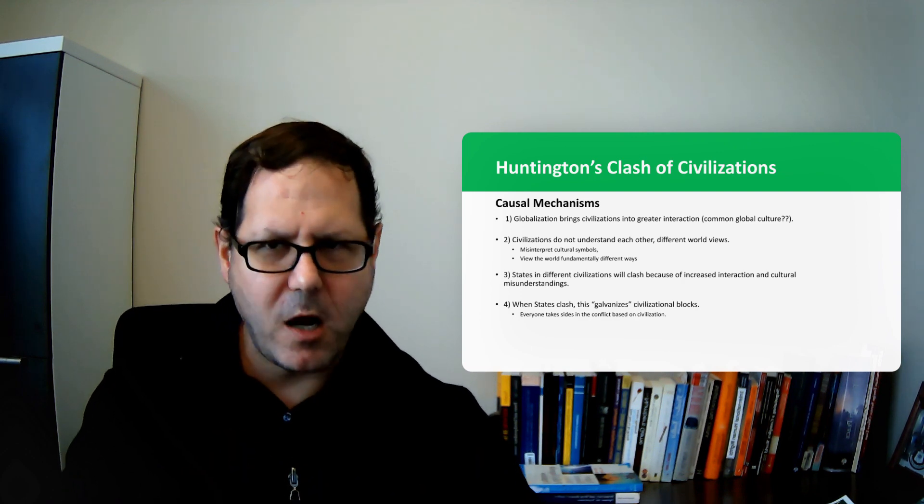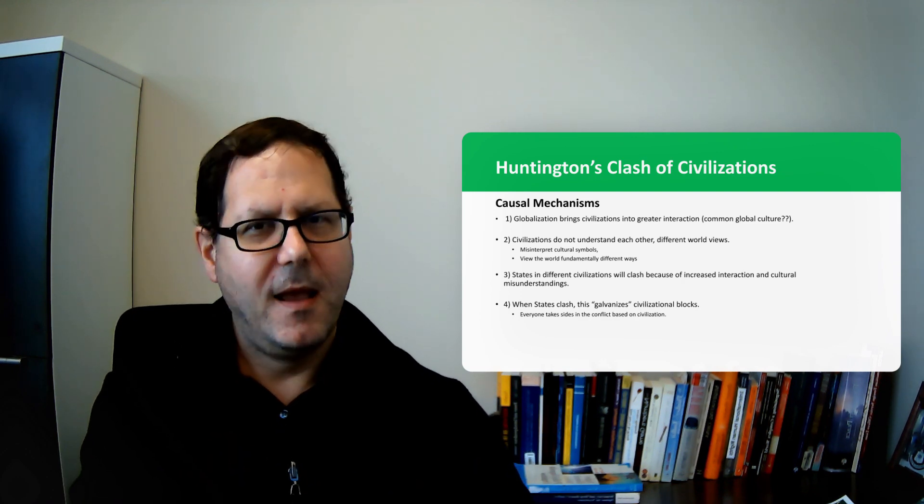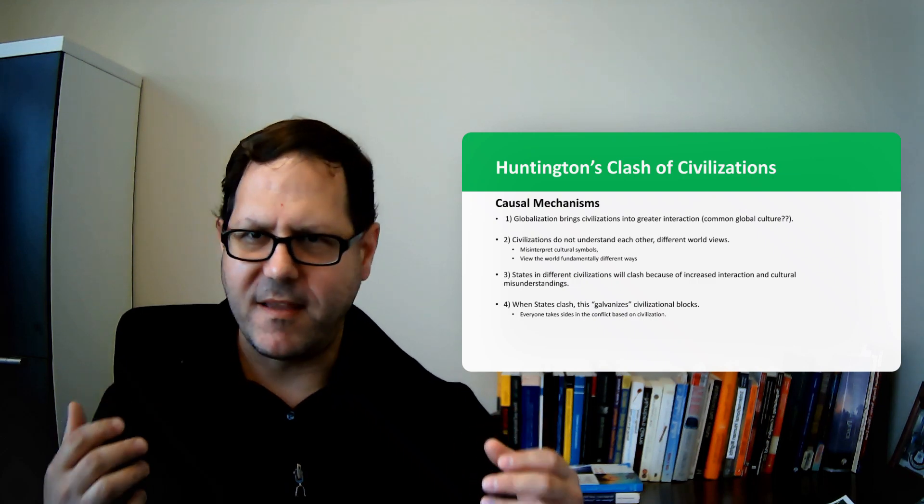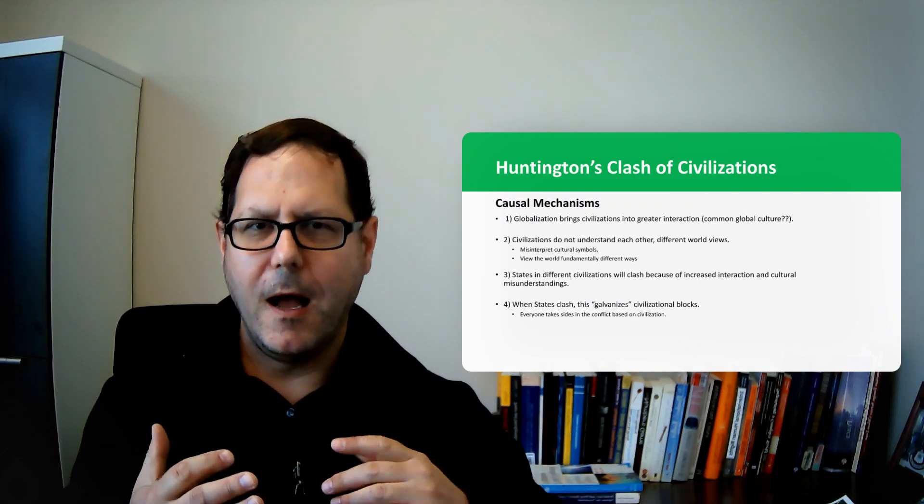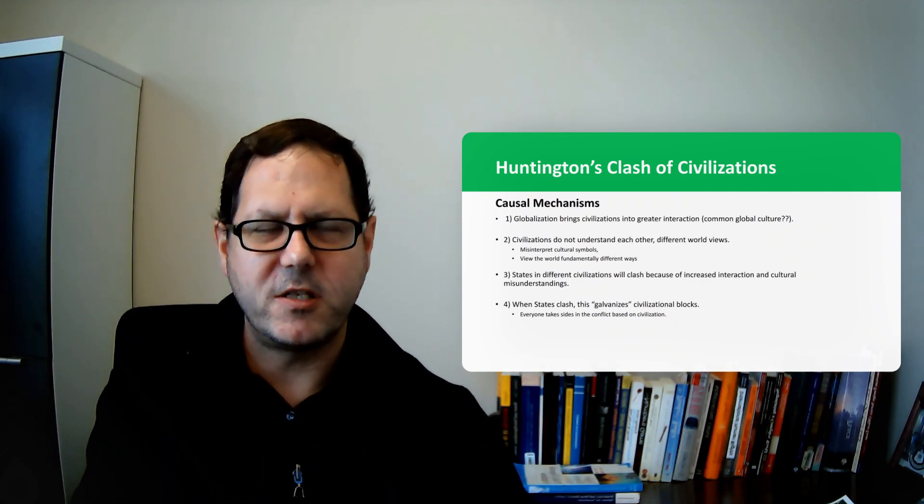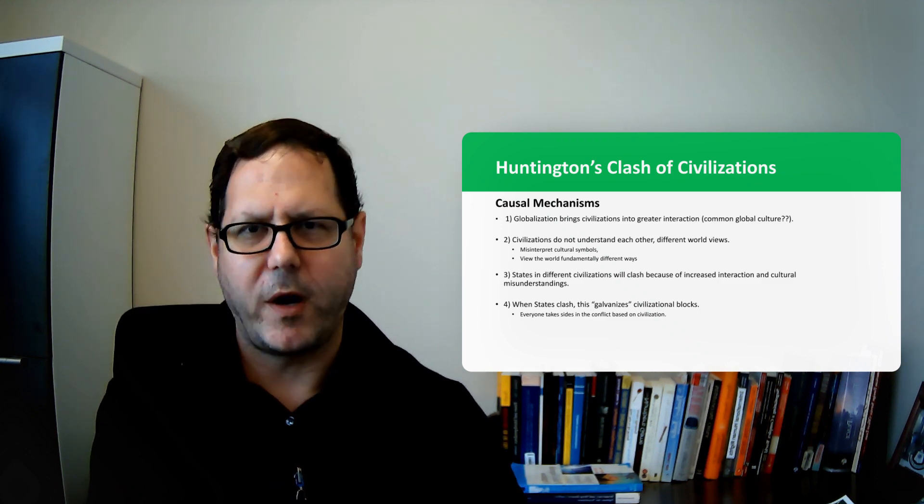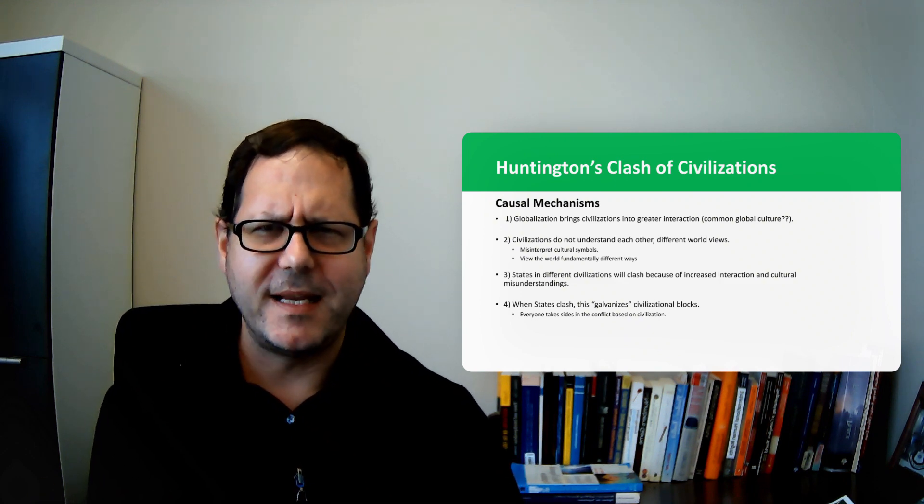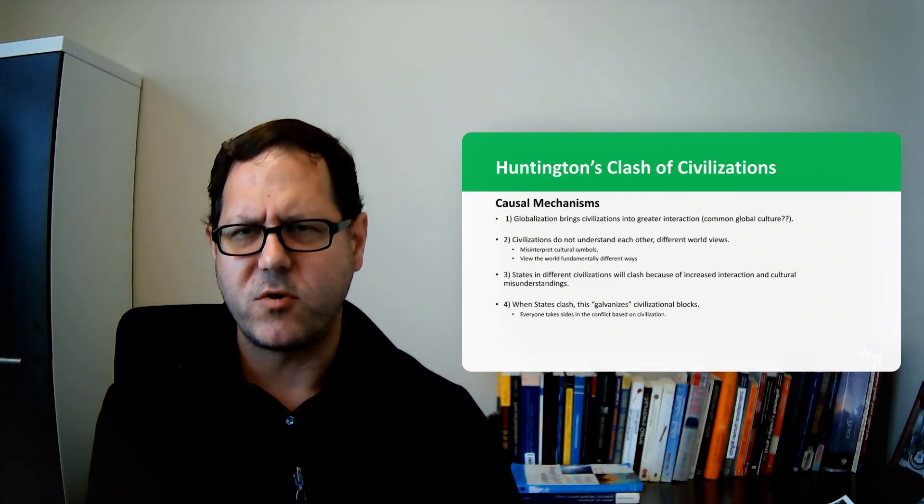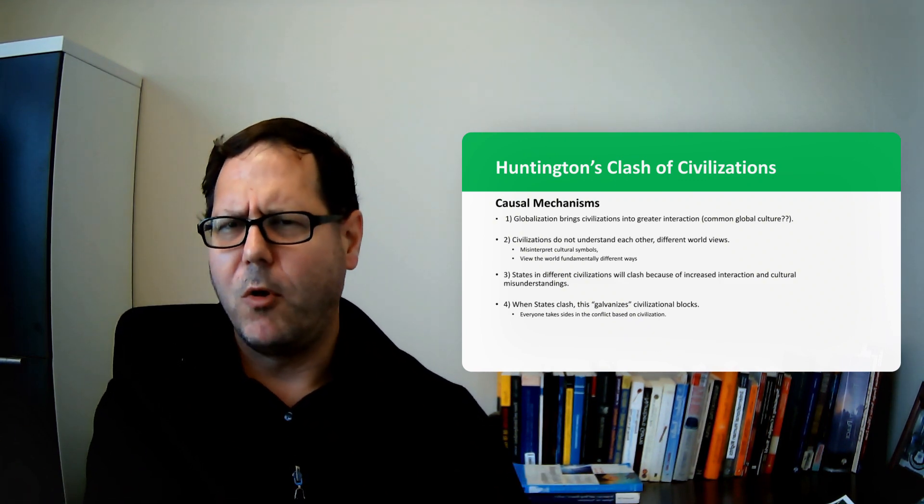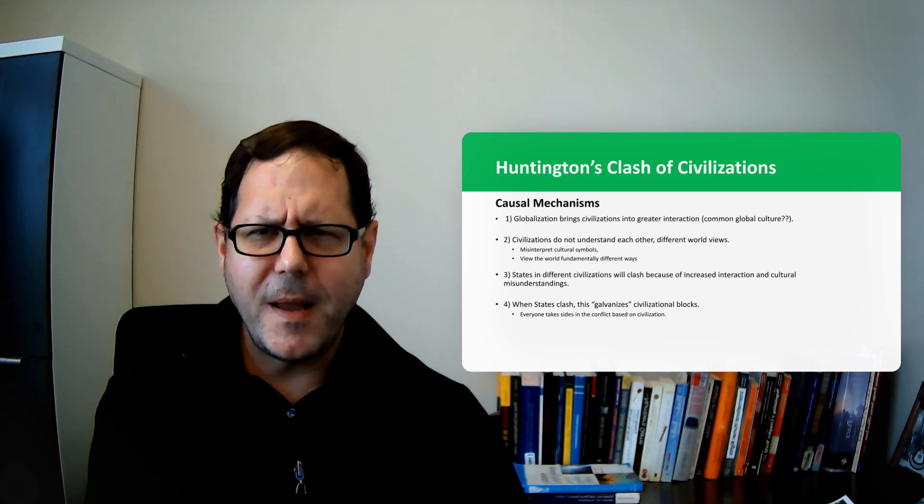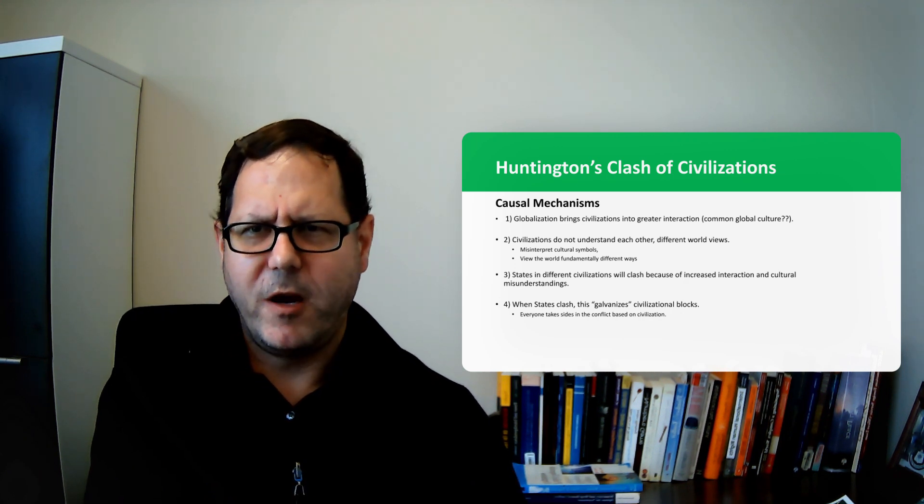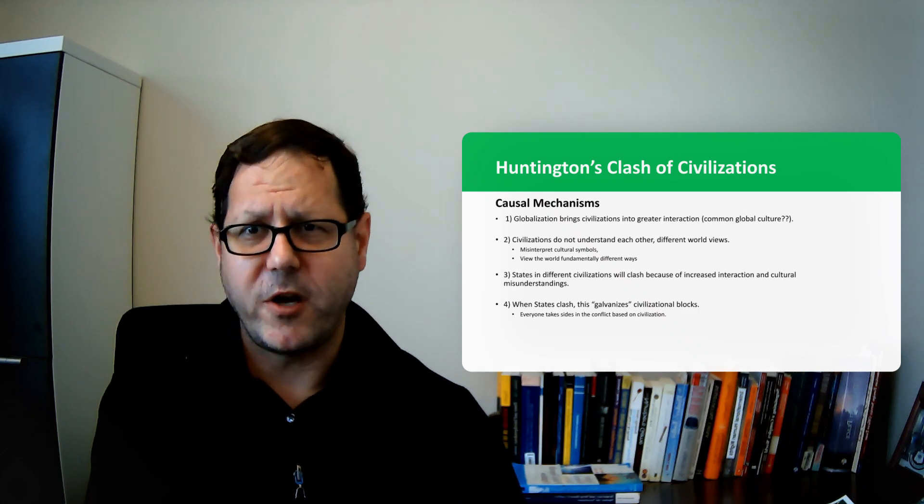So far I'm 100% with Sam Huntington. Globalization increases interactions, I think that's a solid story. Different foundational assumptions about how the world works, I think that's a solid story. I think no anthropologist would disagree with that even if they might pick at the idea of how these civilizations are organized or how ancient or immutable they are. And then finally if you put people in a small room who fundamentally disagree about the world and make them interact they're going to annoy each other.